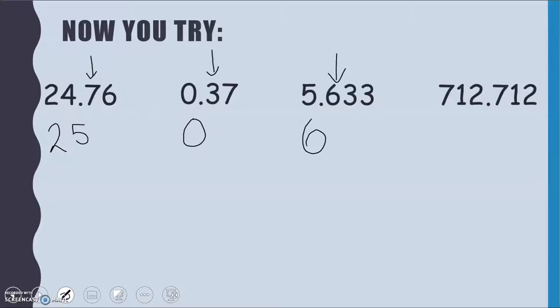And then 712.712. Well, it's this 7 here that's telling me whether I'm rounding up or staying the same. We round up. So the whole numbers that it's between are 712 and 713. So we need to go up to 713 for our answer there. Hopefully we got all four of those correct.